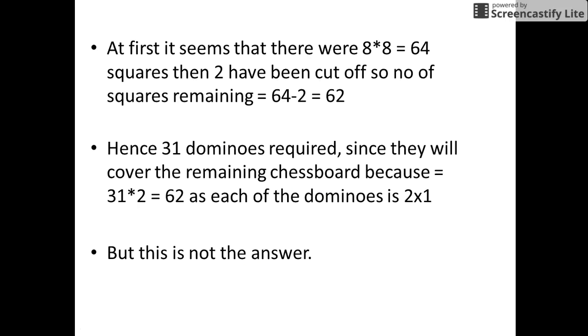At first it seems that there were 8x8 = 64 squares, then 2 have been cut off, so the number of squares remaining is 64-2 = 62. Hence 31 dominoes are required, since they will cover the remaining chessboard because 31x2 = 62, as each of the dominoes is 2x1.